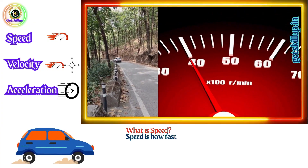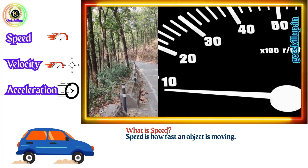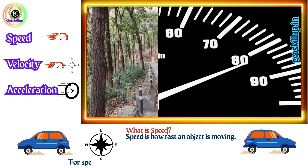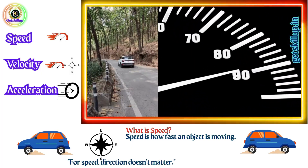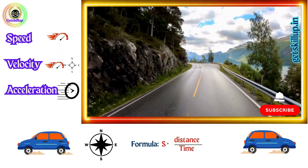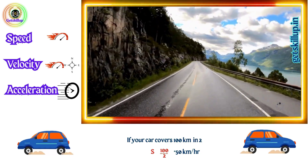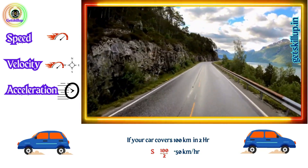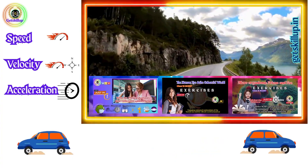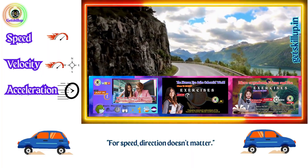What is speed? Speed is how fast an object is moving. It tells you the distance covered in a certain amount of time, but it doesn't tell you the direction. Formula: speed equals distance by time. Example: if your car covers 100 km in 2 hours, your speed equals 100 by 2, which is 50 km per hour. Doesn't matter whether you go north, south, or around in circles — speed only cares about how fast you go.